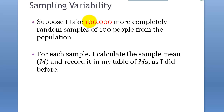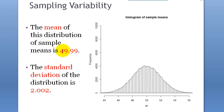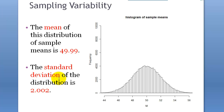What if we keep doing it — 100,000 sample means from the population? Now it's going to look like this. The mean of this distribution of sample means is 49.99 — extremely close to the actual population mean. With 100,000 samples of 100, it's getting close to the actual size of the population, so it's no wonder it's converging to the actual population mean. And the standard deviation is about 2.002.